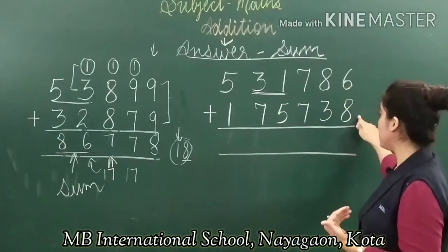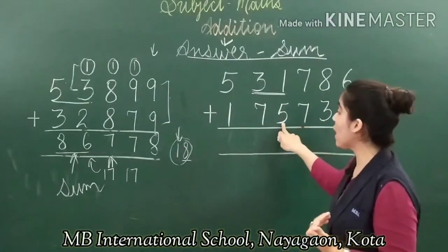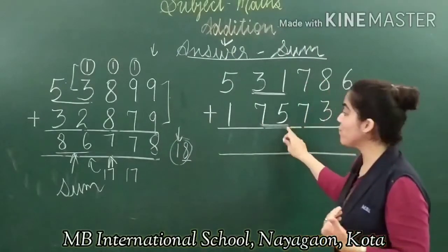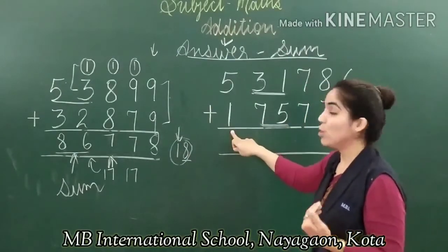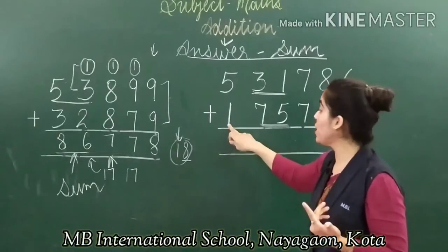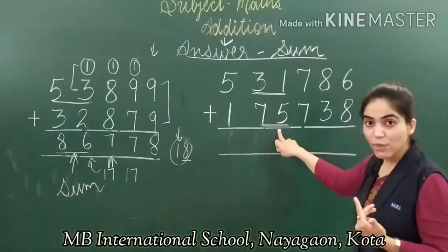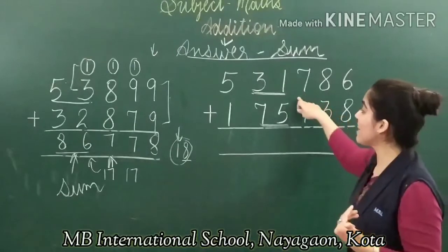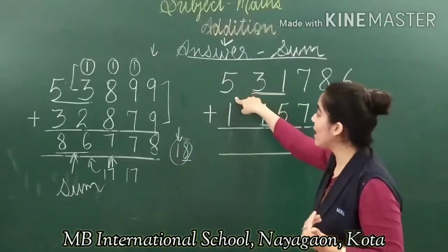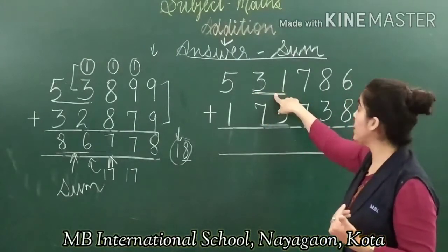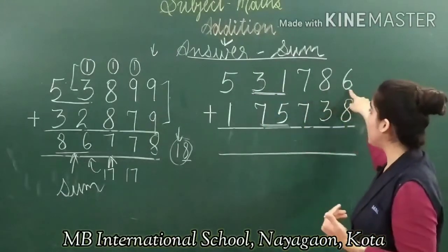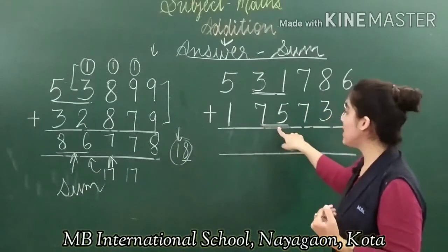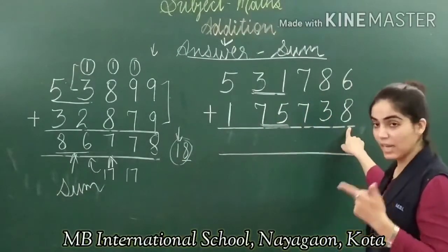Second addend — ones, tens, hundreds, thousands, ten thousands, lakh. This is also in the thousands series. Reading together: one lakh, seventy-five thousand, seven hundred, thirty-eight. So first addend is five lakh, thirty-one thousand, seven hundred, eighty-six; second addend is one lakh, seventy-five thousand, seven hundred, thirty-eight.